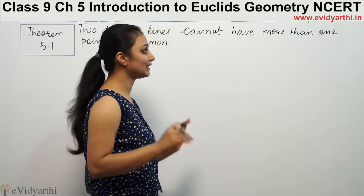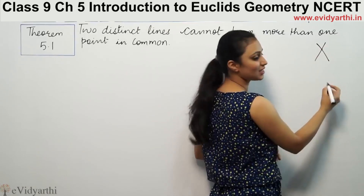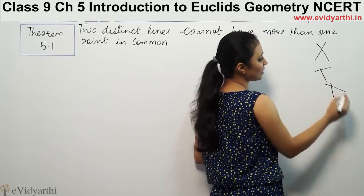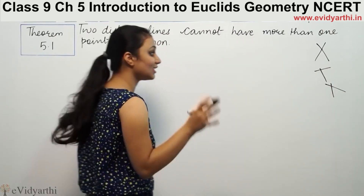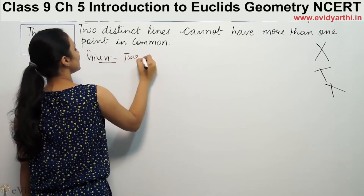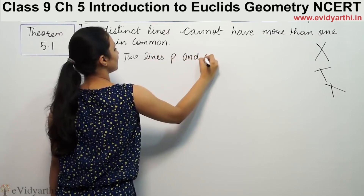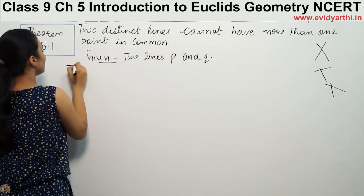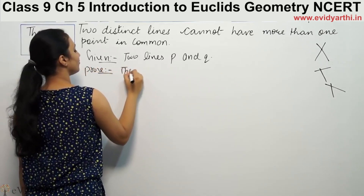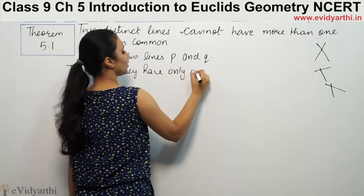Now we prove that two distinct lines — two different lines which can be taken from each other — we can take a common point. So we are given two lines, supposedly P and Q, and we need to prove that they have only one common point.